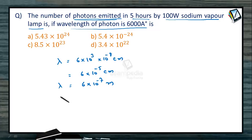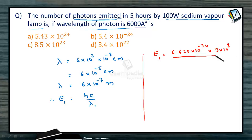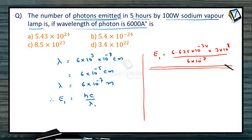This is the wavelength, and thereby the energy corresponding to one photon, E₁, is equal to hc/λ. Therefore the energy corresponding to one photon is hc = 6.625 × 10⁻³⁴, c = 3 × 10⁸, divided by the wavelength 6 × 10⁻⁷. This gives the energy associated with one photon.